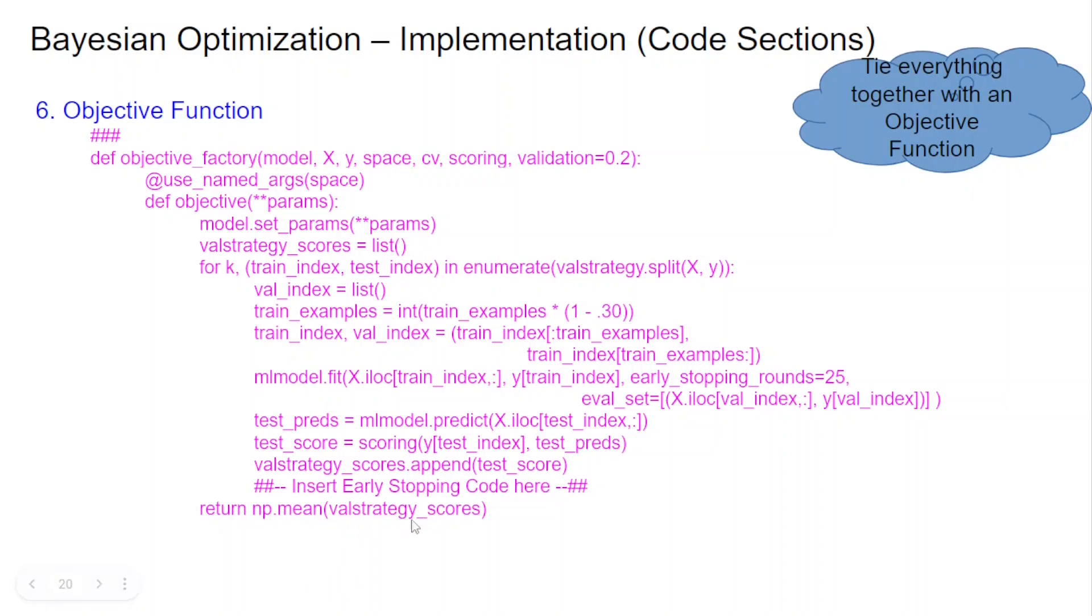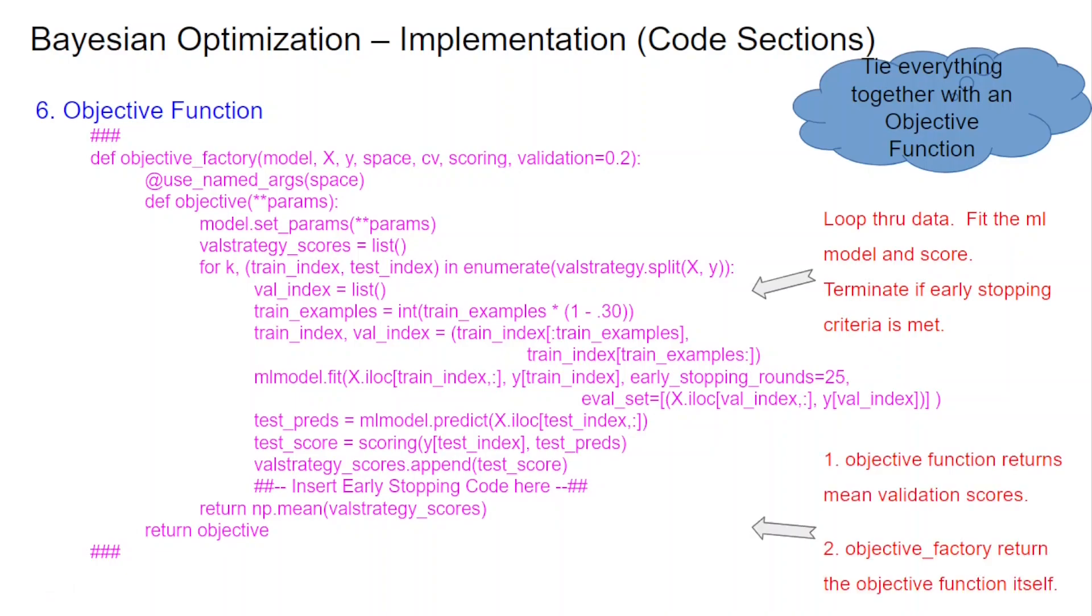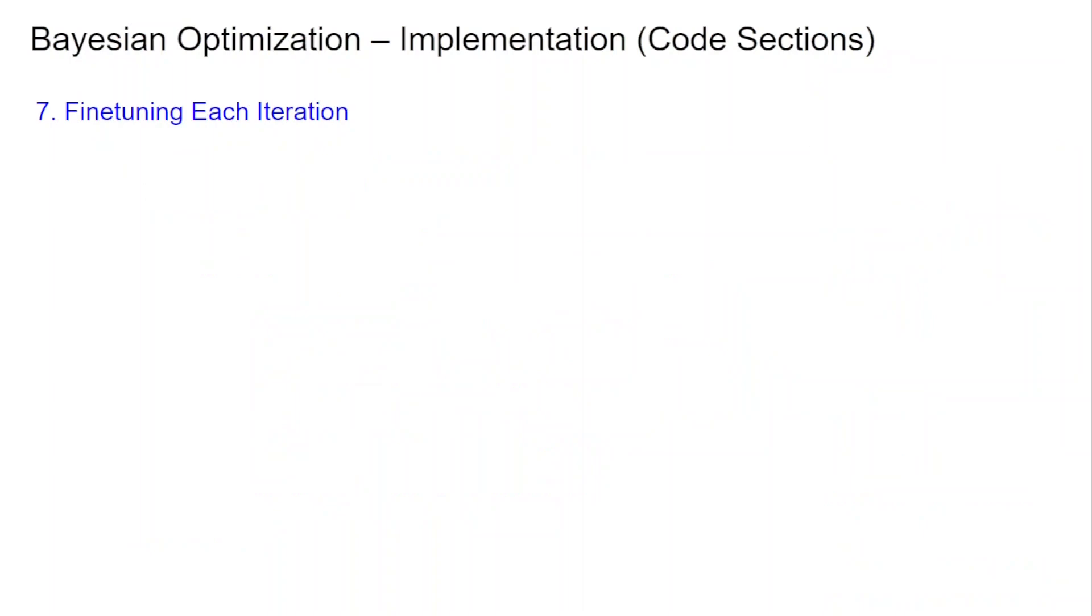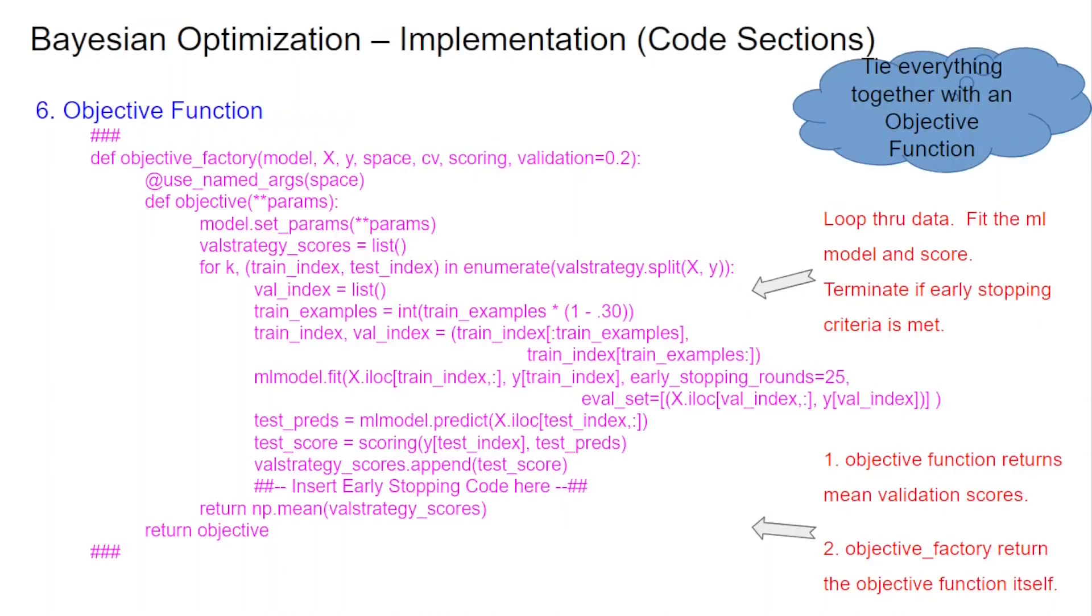So when the top 20 percentile is no more being met every time it comes in then I'm actually going to be exiting as part of my early stopping. So when I exit this loop what happens? It obviously will return whatever earlier was the validation strategy scores and that is what is going to go out rather than it trying and adding pathetic bad values in. So what have we essentially done? Loop through the data, fit the ML model and score it, terminate early stopping. The objective function is going to basically return a couple of things. One is it returns my mean validation scores and the objective function itself.